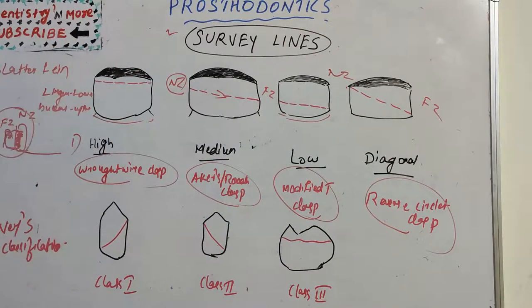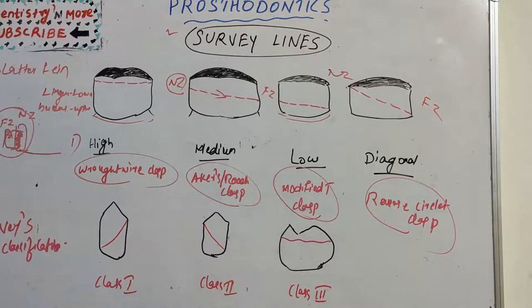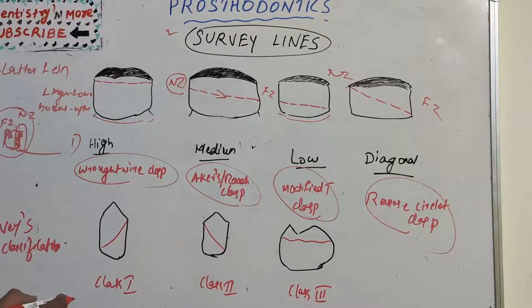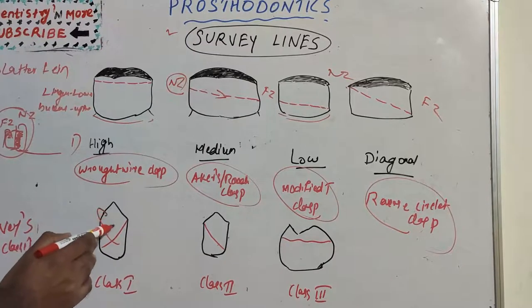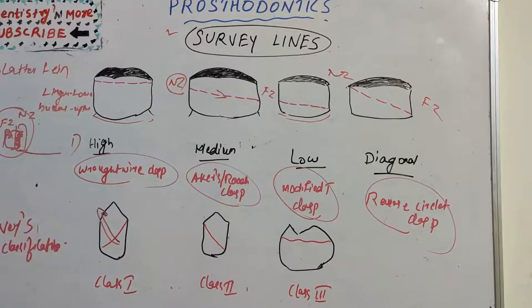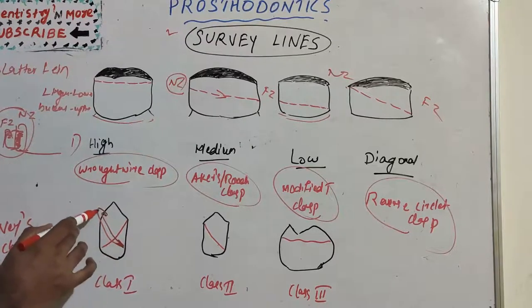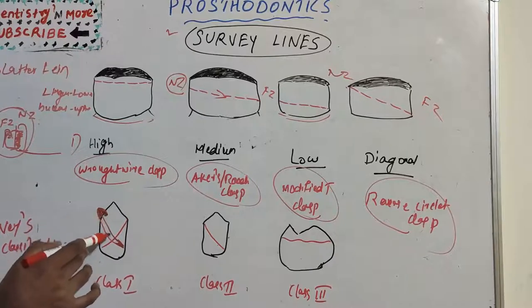We also have the Nee classification, which classifies survey lines as Class 1, Class 2, and Class 3. In Class 1, the survey line runs diagonally across the tooth surface, and the type of clasp indicated is an occlusally approaching cast clasp with the terminal third engaging the undercut.